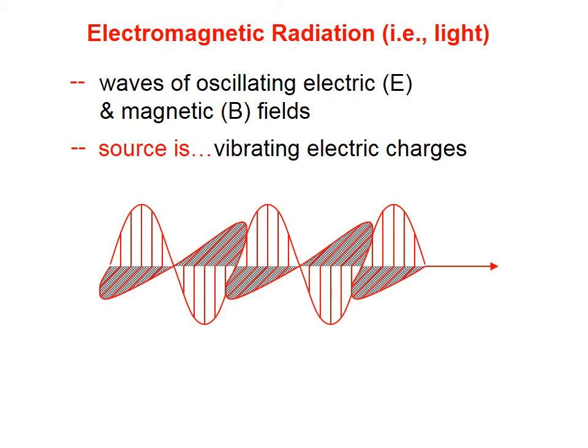The source of all light is wiggling electric charges. When an electric charge is wiggling, it's going to give off light. Just like if you take a stick and put it into a pond and wiggle it, waves will travel outward from the source of the shaking stick. If you have an electric charge — an electron, for example — and it wiggles, it will emit light in every direction.